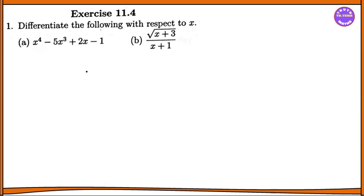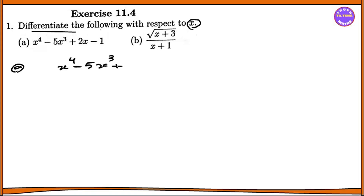Now we have to differentiate the following with respect to x. x is the differential. Number 1 is x power 4 minus 5x² plus 2x minus 1. This is the differential, d by dx.